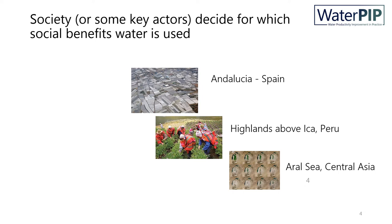Let us look at three examples which provide different answers to the main social benefits of water. In Andalusia, Spain, there is an example of jobs as main benefit versus culture. Water is used to generate jobs, where more jobs are generated per drop of water in greenhouses, followed by strawberry farms, olive orchards, and rice fields. The cultural value of paella rice seems to be dropping, as rice production in Spain is decreasing year by year. So society decided that economic jobs are more important than cultural heritage.